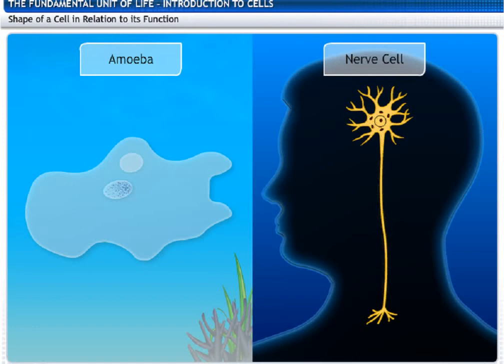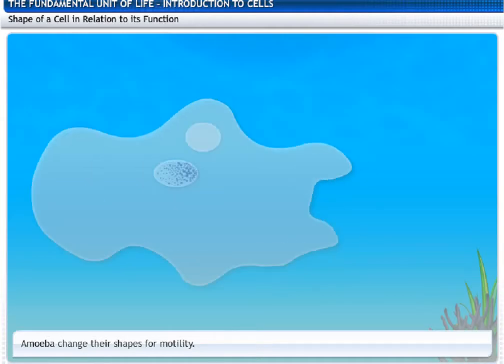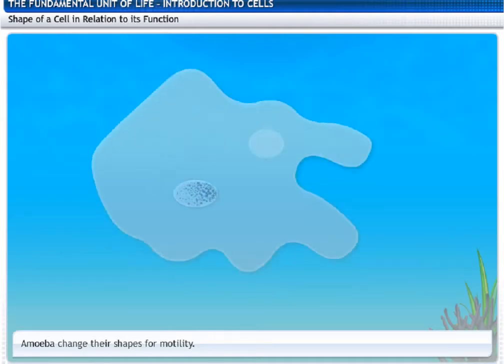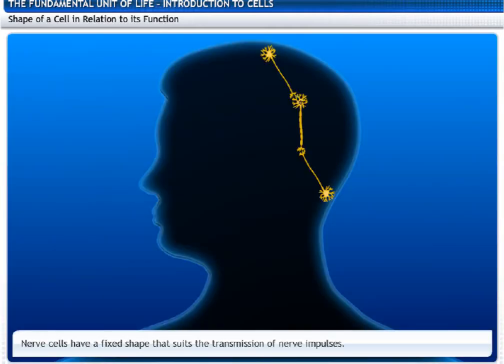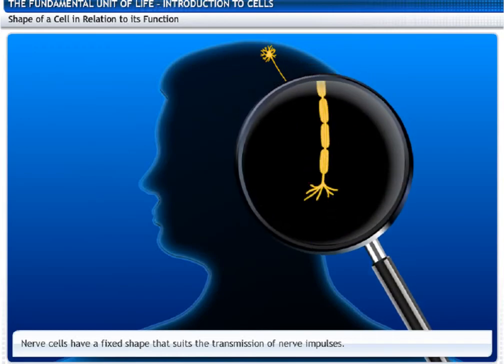The shape of a cell is related to the specific function it performs. Cells like amoeba change their shapes for motility. Cells like nerve cells have a fixed shape that suits their function of transmitting nerve impulses.